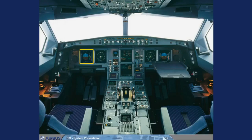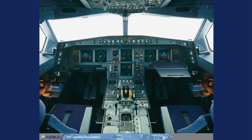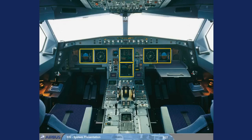The Electronic Instrument System, EIS, consists of six identical liquid crystal display units, LCD. The EIS is divided into two subsystems: the Electronic Flight Instrument System, EFIS, for which each pilot has two displays; and the Electronic Centralized Aircraft Monitoring System, ECAM, which uses the two displays in the center to provide information on the aircraft systems.